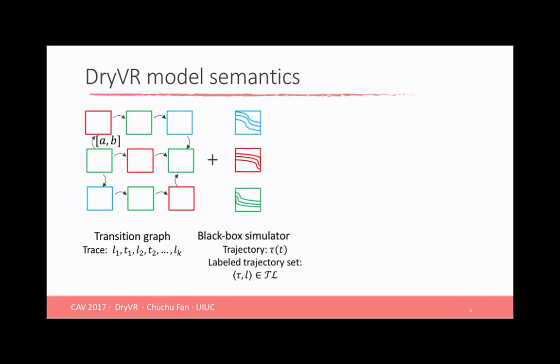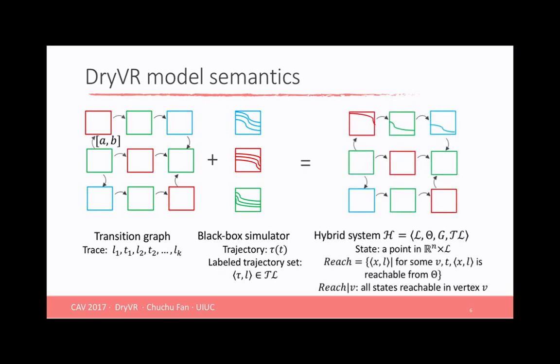And we see the trace of the transition graph is this sequence of alternatives of mode and transition time. For the black box, we are actually going to get some trajectory that describes the state of the system for each mode. So the black box itself can be seen as a labeled trajectory set. Together, a hybrid system is this tuple of mode, initial set, graph, and the black box. A state of the hybrid system is a point in the state space labeled by its mode. And we define the reach set as all the reachable states for the entire transition graph from the initial set for every vertex and at any time. We can also restrict the reach set for a certain single vertex.